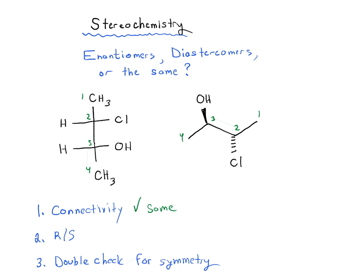The next thing to do is figure out R/S for each of the stereocenters, which means we first need to identify where the stereocenters are. Hopefully you can see that each of these molecules has two stereocenters. Here is stereocenter number one, here is stereocenter number two. Remember, in a Fisher projection the arms come out to hug you, so the side groups are wedges coming toward you.